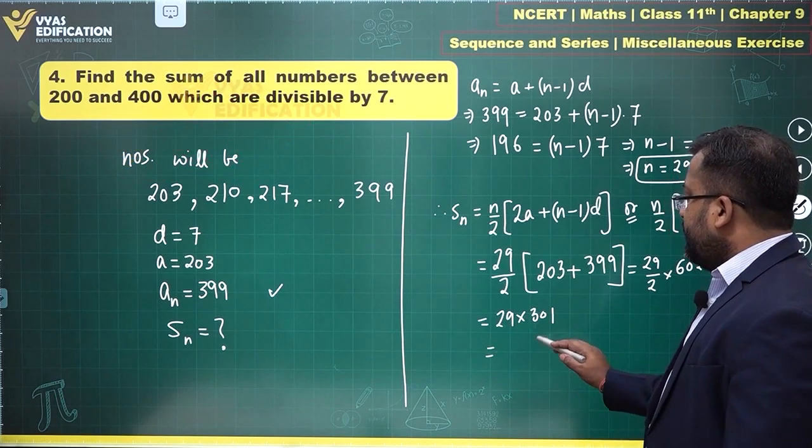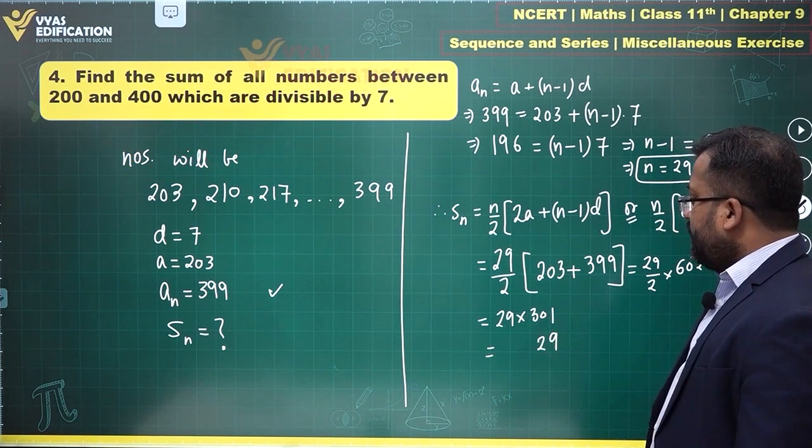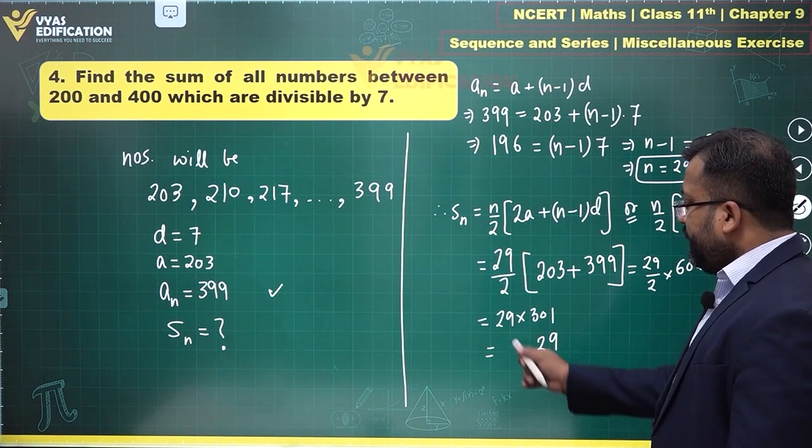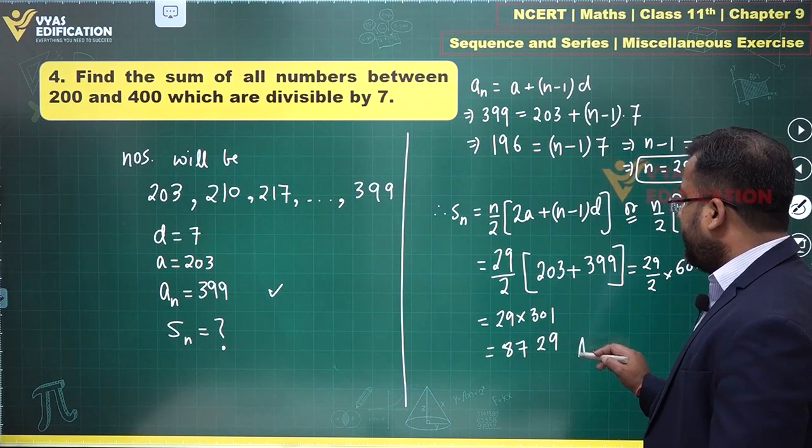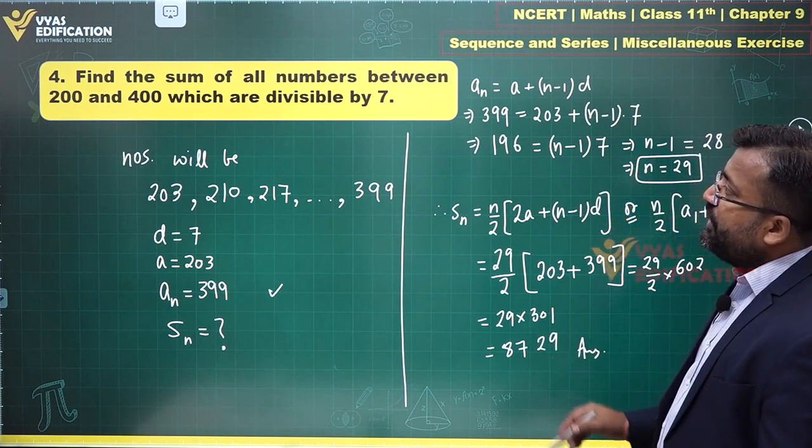Let's multiply that. 29 into 1 is 29, 29 into 0 carried forward is 2, 29 times 3 is 87. So this is 8729, and that is my required answer for this question number four.